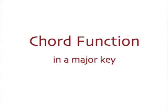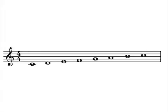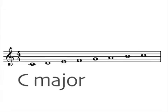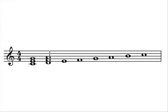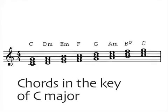I want to look at chord function in a major key. A major key is made up of seven different notes. The eighth one is just a repeat of the first. This is C major and on each of the notes you can build a chord, simply stacking up notes from the key. So these are the chords of C major.